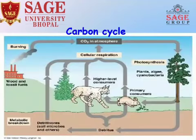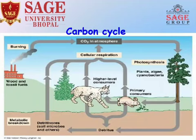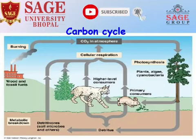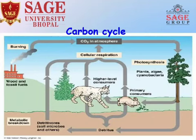In the Carbon Cycle diagram, Carbon Dioxide is present in the atmosphere. From factories where wood and fossil fuels are burned, Carbon Dioxide enters the atmosphere. This Carbon Dioxide is taken by plants, and plants release oxygen which is vital for all human beings. From plants, primary consumers eat the leaves, and higher consumers consume primary consumers. As a result of respiration, Carbon Dioxide is again released back into the atmosphere.